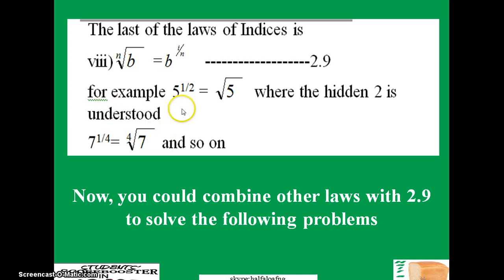For example, we have 5 raised to power one-half equals square root of 5. Remember this root here is 2, so what is here is 2, this is the standard. That is why the 2 is not really reflecting. Another example here is 7 raised to power one-fourth, and this is fourth root of 7, and so on.